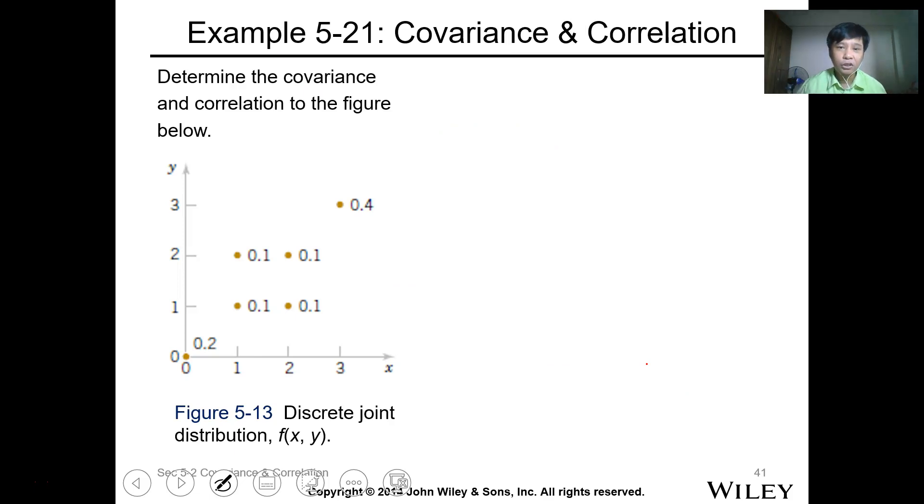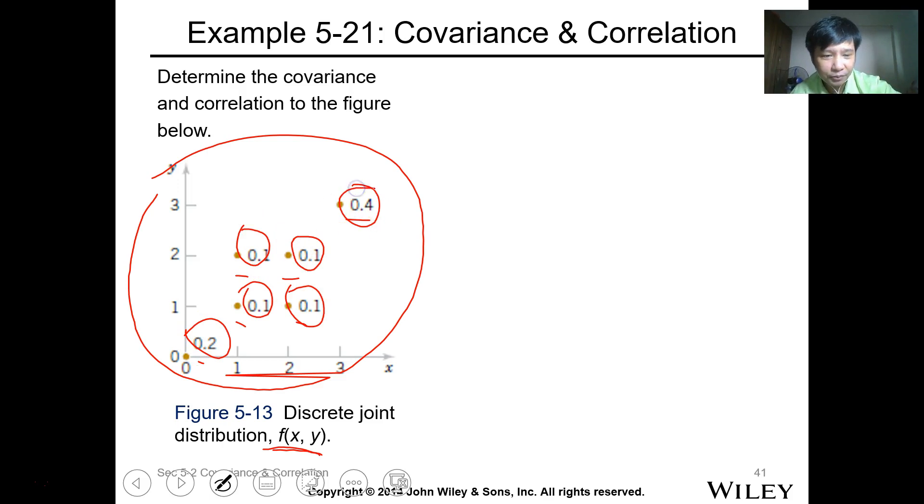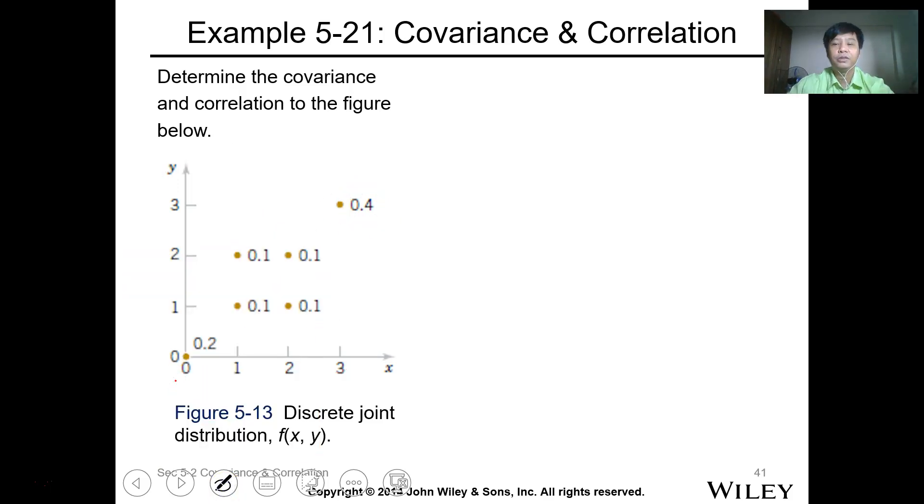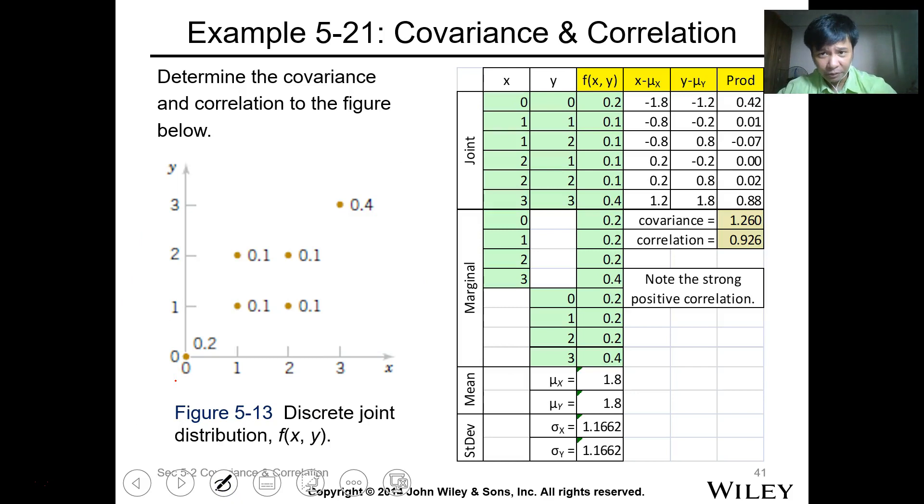For covariance and correlation, this is an example of a probability function with x and y. Determine the covariance and correlation for the figure below. This is your data. You have how many data points? 1, 2, 3, 4, 5, 6. Six data points. And these values are the probabilities of the function.